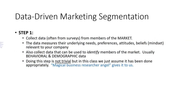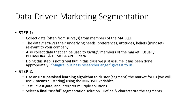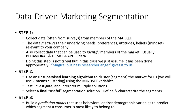Now, where does the data for step one come from? In this video we're going to presume that a magical business research angel provided us with this research. Step two is where we step in — we're going to use an unsupervised learning algorithm to cluster or segment the market using k-means clustering. We'll use mindset variables to generate these segments, test a variety of segmentation schemes, interpret them, and select a final useful segmentation solution. After that, step three is to build a prediction model using behavioral and demographic data to predict the mindset of the consumer.